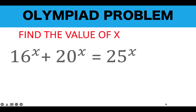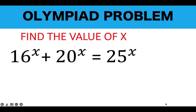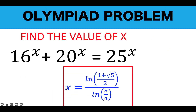The value of x that satisfies the original equation is x equals ln of the golden ratio — 1 plus square root of 5 over 2 — over ln of 5 over 4. This problem is now solved. Thank you very much, and we'll see you in our next video. Bye for now.